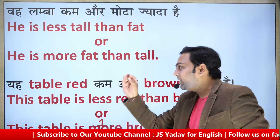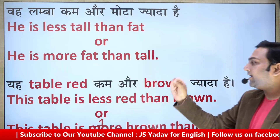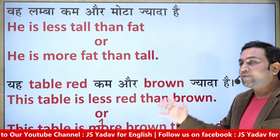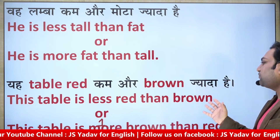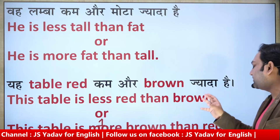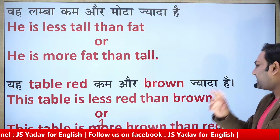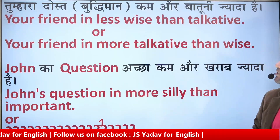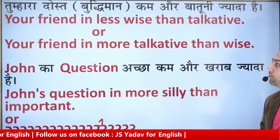The second example: 'This table is less red than brown,' or 'This table is more brown than red.' I hope you guys have got these examples.